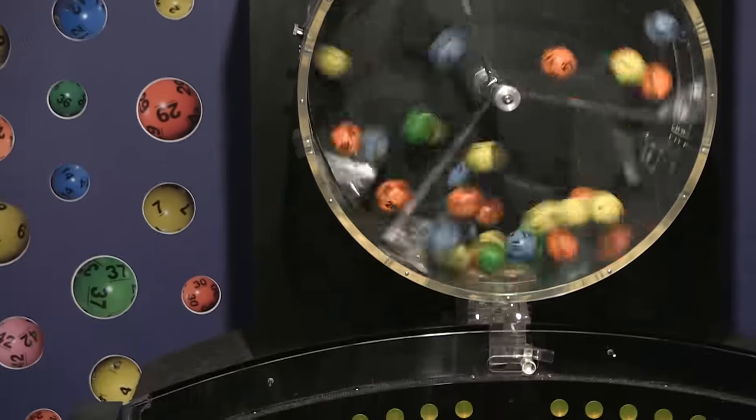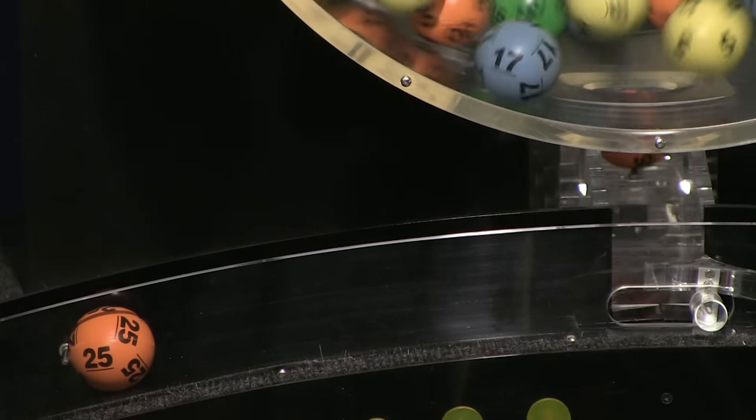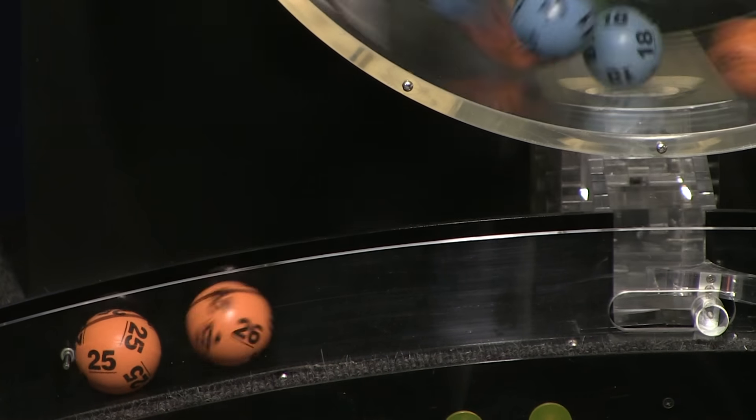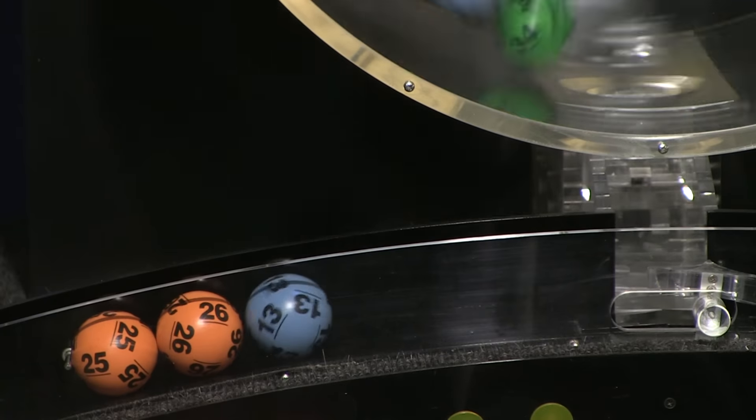Now let's see how you did in tonight's Mass Cash drawing. Our first number up is number 25, following that we have number 26, and here comes number 13.